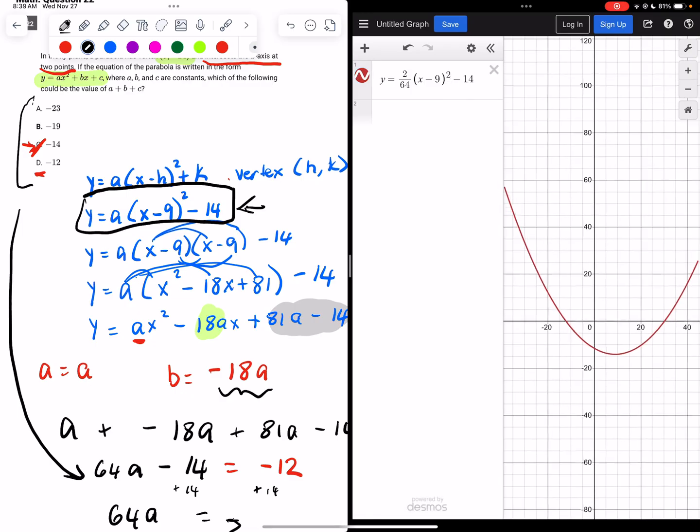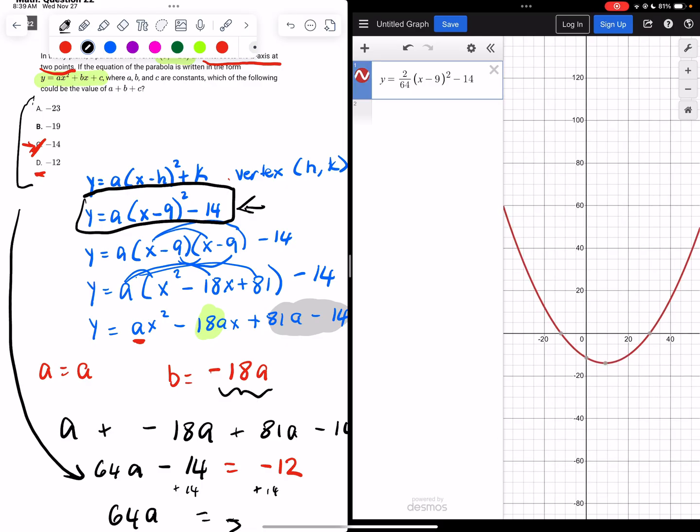And lo and behold, this function does in fact have two solutions. One over here, one over here. Alright. So that is a possible value. Once you've found one possible value that works, the good news is you don't have to keep checking all of them. D is in fact our answer, and we're good to go. Alright. Thank you.